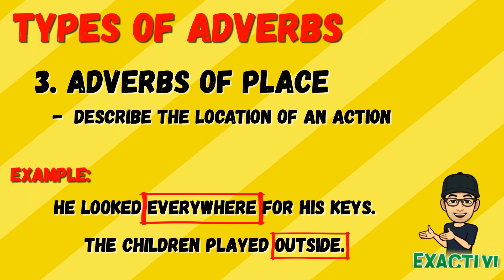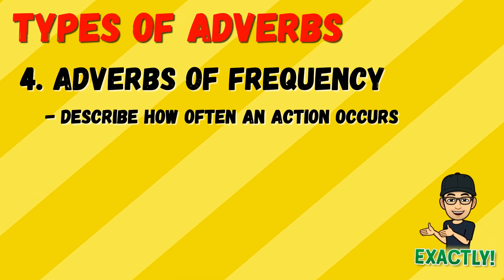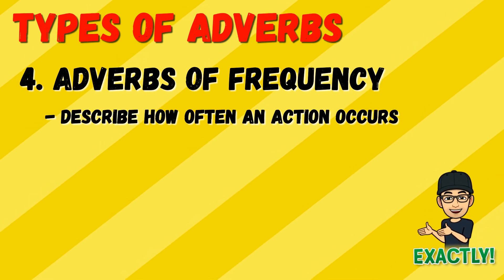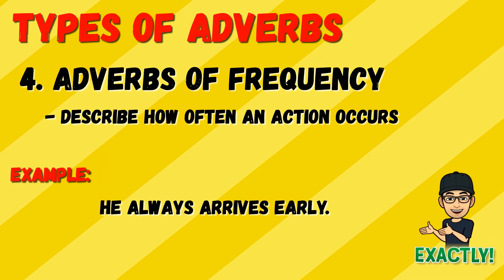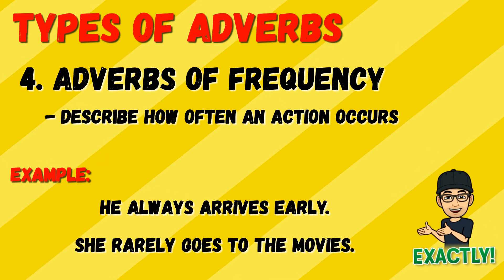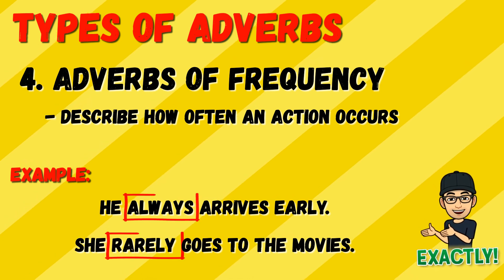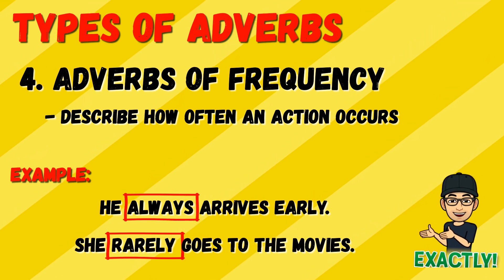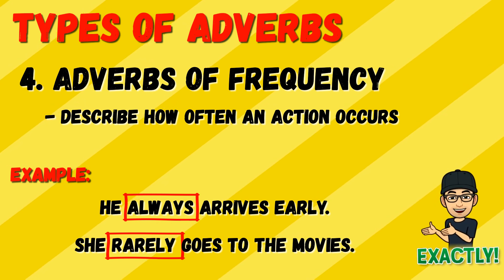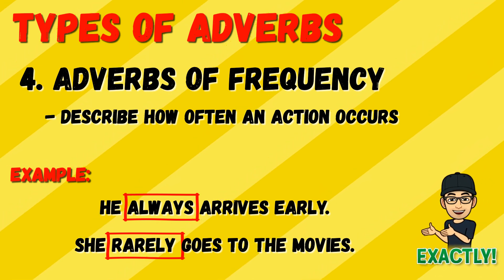Next is adverbs of frequency. These adverbs describe how often an action occurs. For example: 'He always arrives early' and 'She rarely goes to the movies.' Always and rarely are adverbs of frequency because they answer the question 'how often' — how often does he arrive early, and how often does she go to the movies.